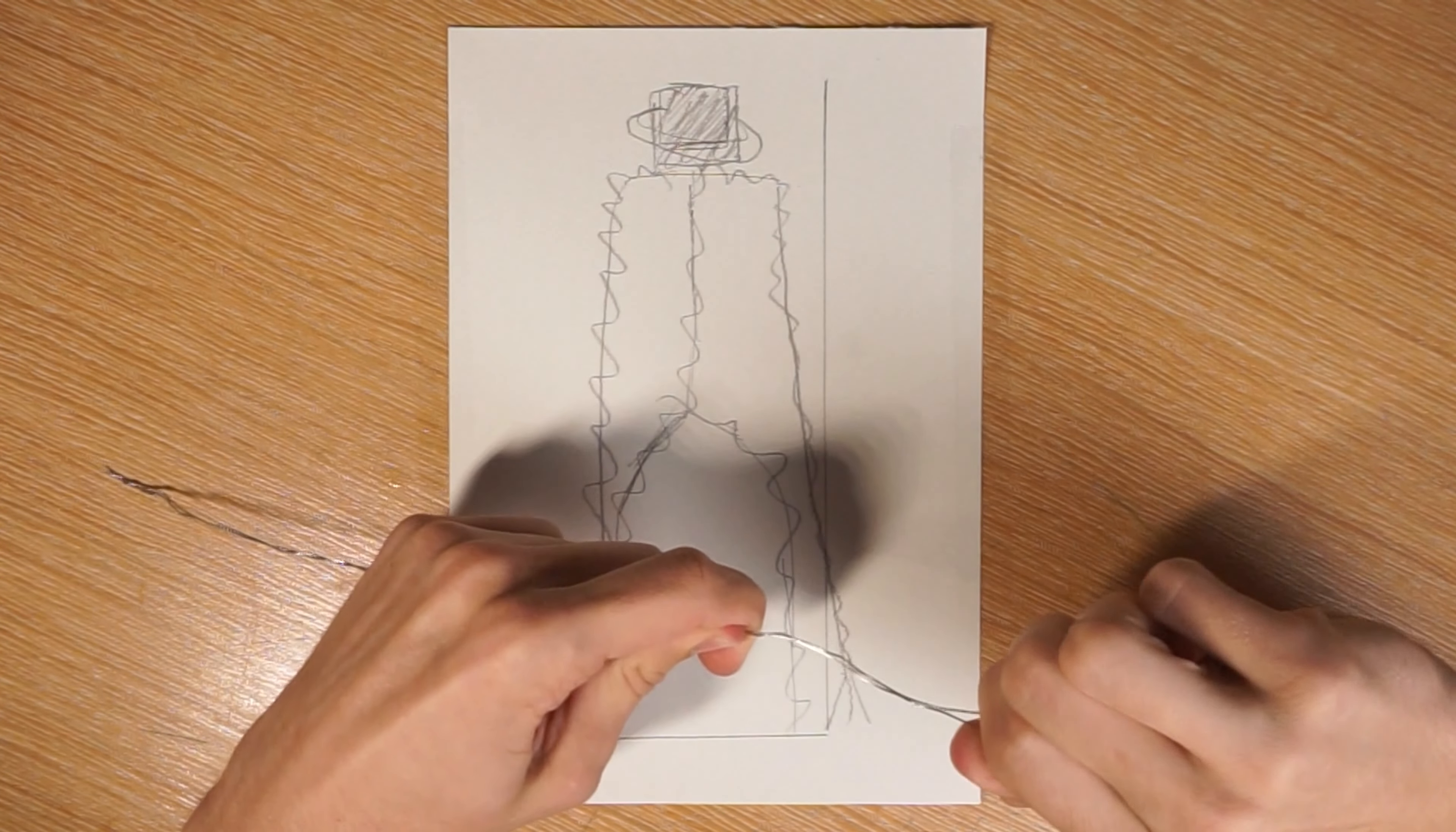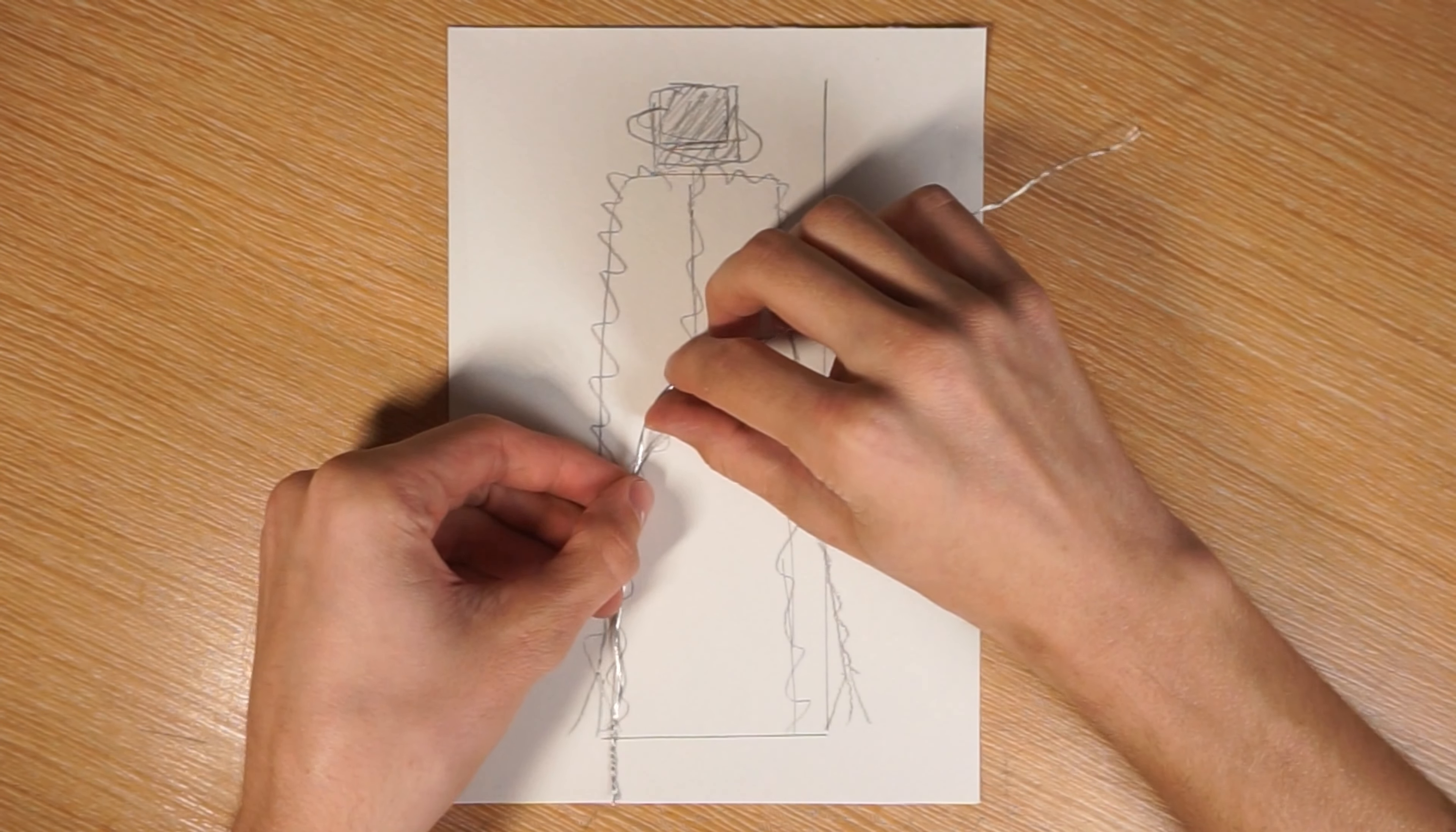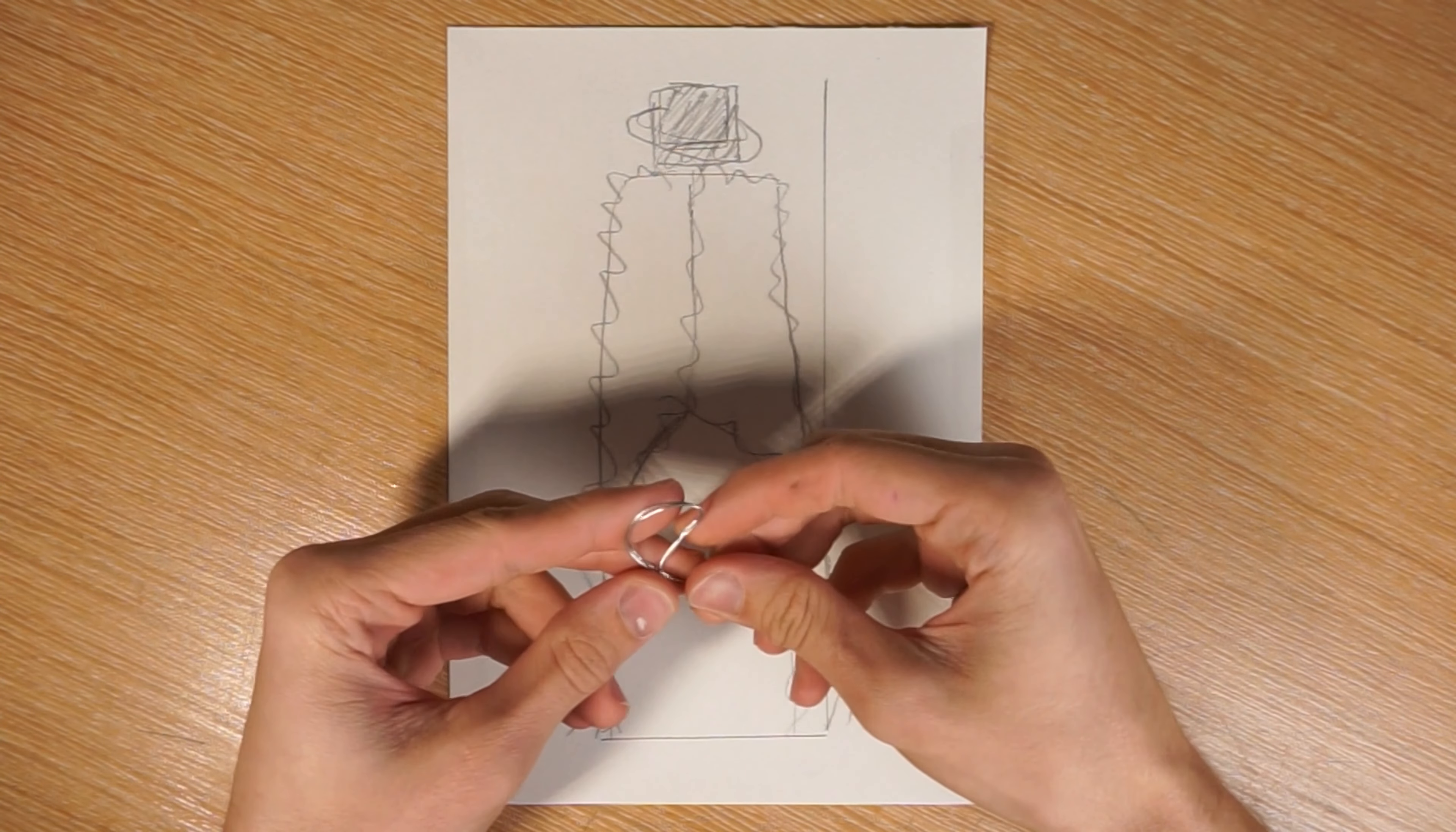I'm doubling up the wire and twisting it to make it more rigid. This first piece of wire will be the legs. I'll add this loop so I can attach the body.